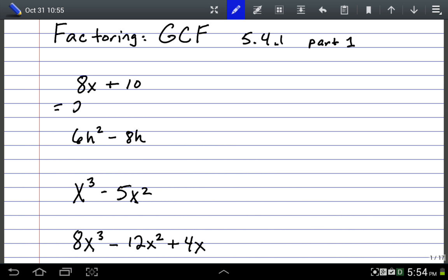So we're going to factor out a 2, and now what we're basically doing is undistributing. So what would I multiply 2 by right here to get the 8x? Well, that would be 4x. Okay, and similarly here, 2 times what here would give me a 10 back? And that would be 2 times 5 there would give me 10. So we have 2 times 4x plus 5.